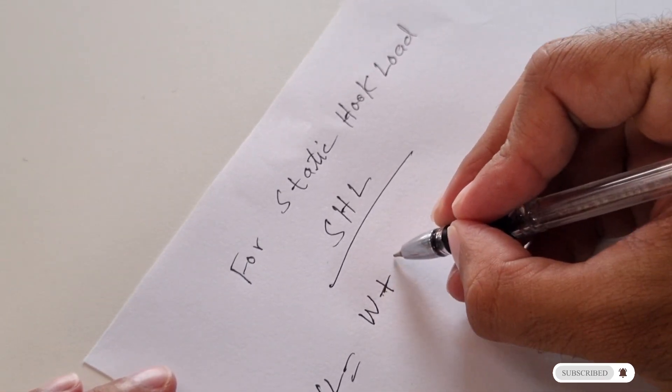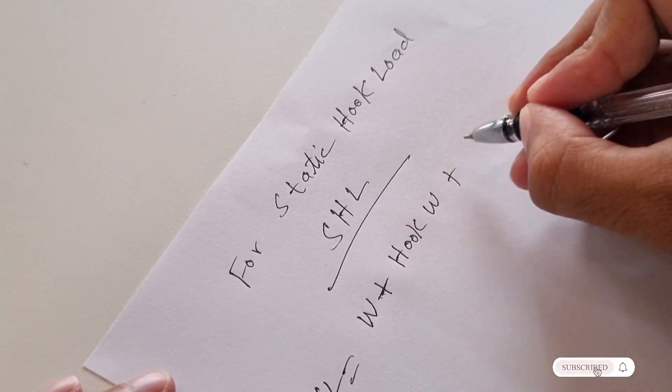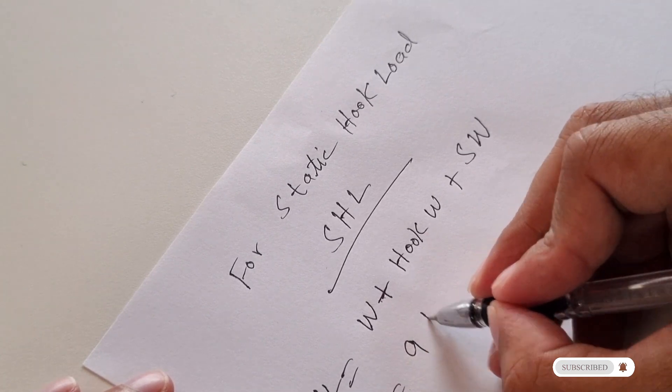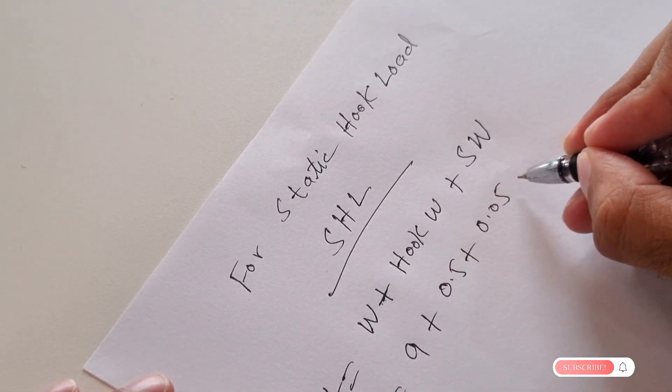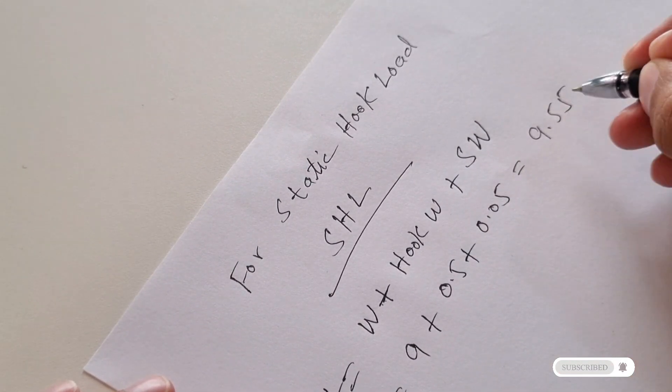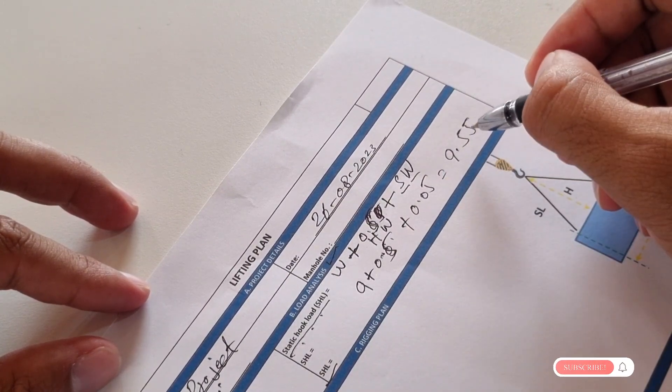Number two, hook weight plus sling weight. Hook weight, let's say in our case 9, 0.5 ton of hook weight is 0.05 ton of sling weight. This will be 9.55. So this way we can calculate our static hook load.